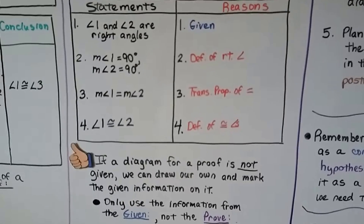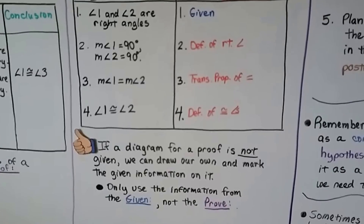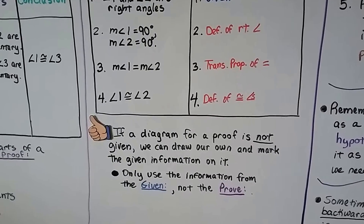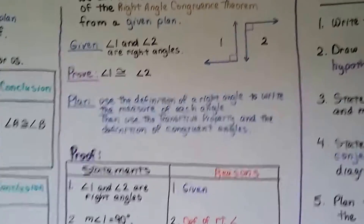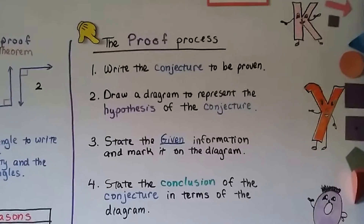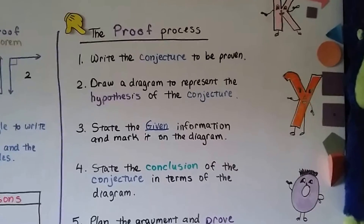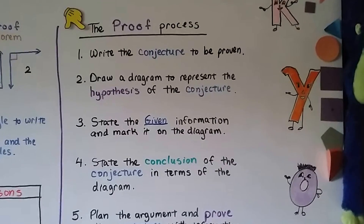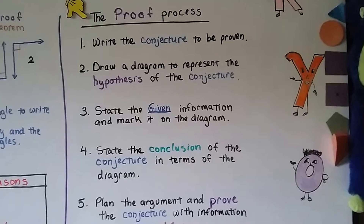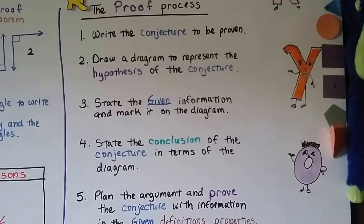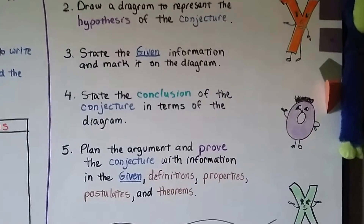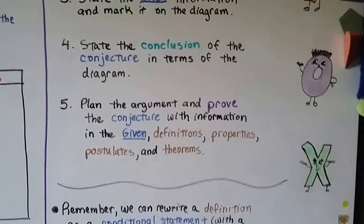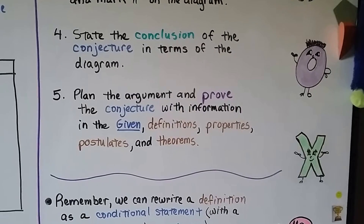If a diagram for a proof is not given, we can draw our own and mark the given information on it. Only use information from the given, not the prove — so if there is no diagram, you use the given to draw it. Here's the proof process: 1. Write the conjecture to be proven. 2. Draw a diagram to represent the hypothesis of the conjecture. 3. State the given information and mark it on the diagram. 4. State the conclusion of the conjecture in terms of the diagram. 5. Plan the argument and prove the conjecture with information from the given, definitions, properties, postulates, and theorems.